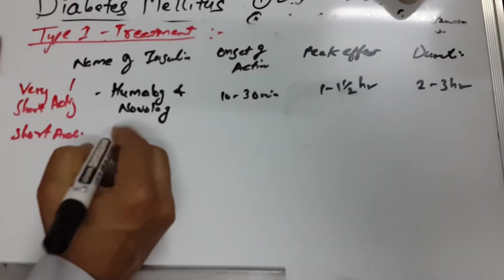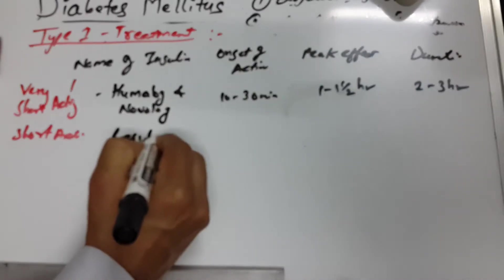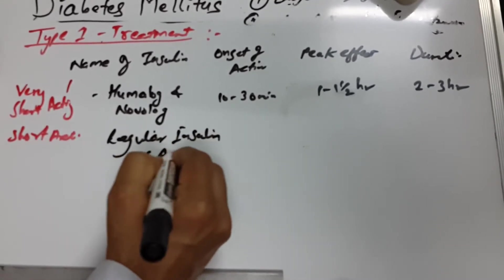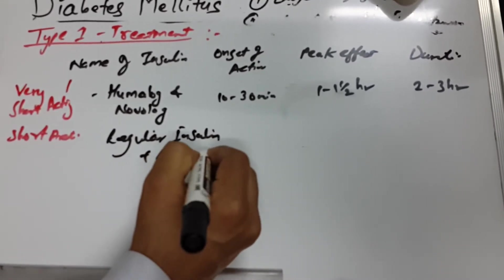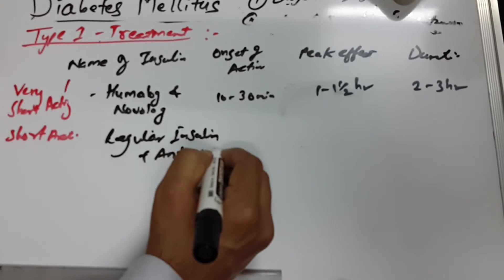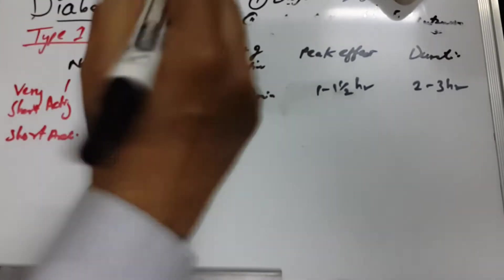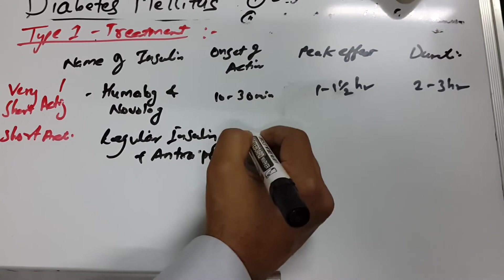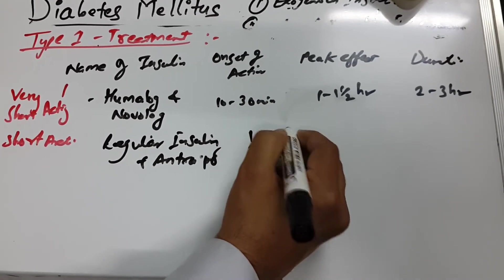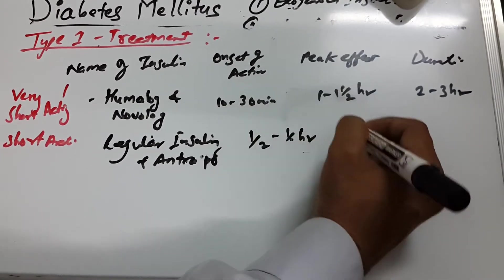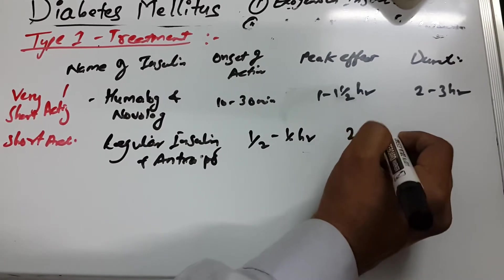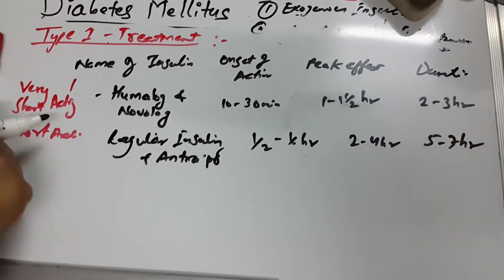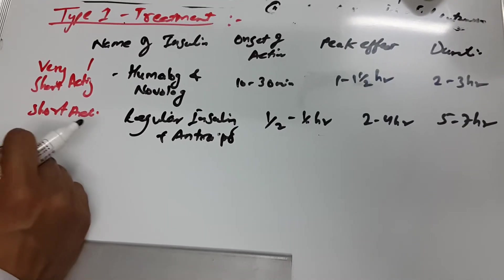Short-acting insulin includes regular insulin and Humulin R. The onset of action is half to one hour, the peak effect is two to four hours, and the duration is five to seven hours.